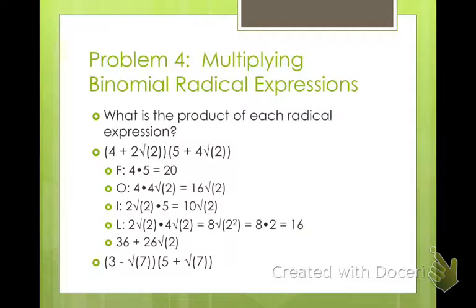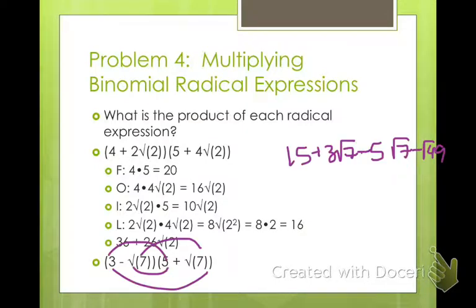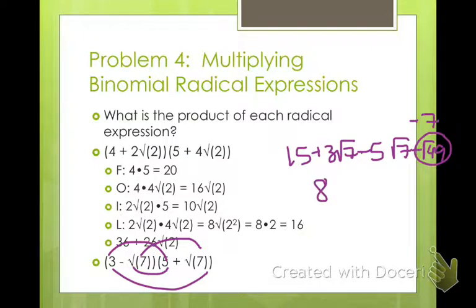Go ahead and try this: 3 minus square root of 7 times 5 plus square root of 7. Pause the video. When you do your FOILing, you get 15 plus 3 square root of 7 minus 5 square root of 7 minus square root of 49. Square root of 49 is 7, so 15 minus 7 is 8. And positive 3 and negative 5 give a negative 2 square root of 7. So 8 minus 2 square root of 7 is your simplified answer.